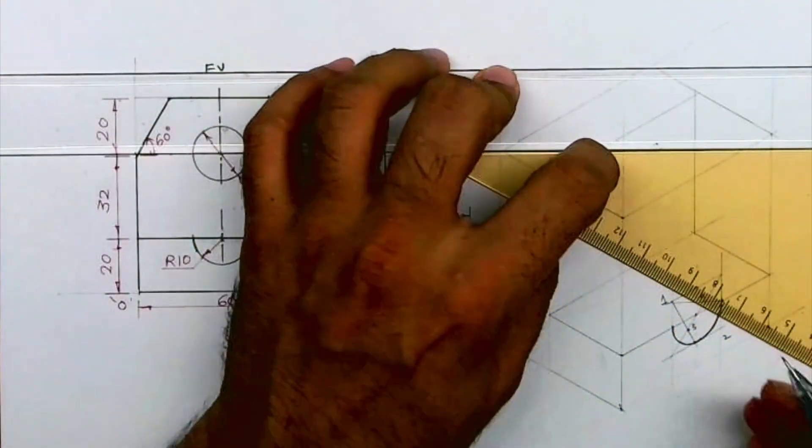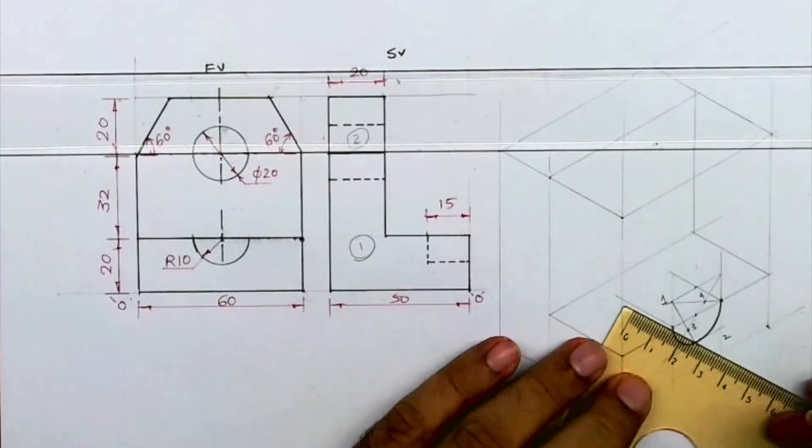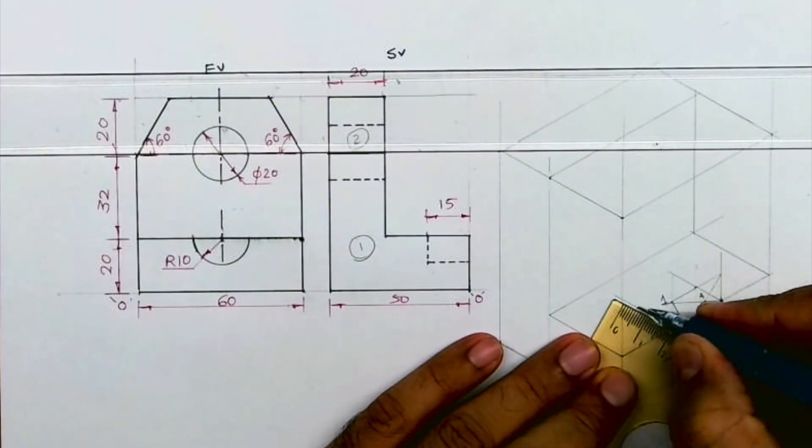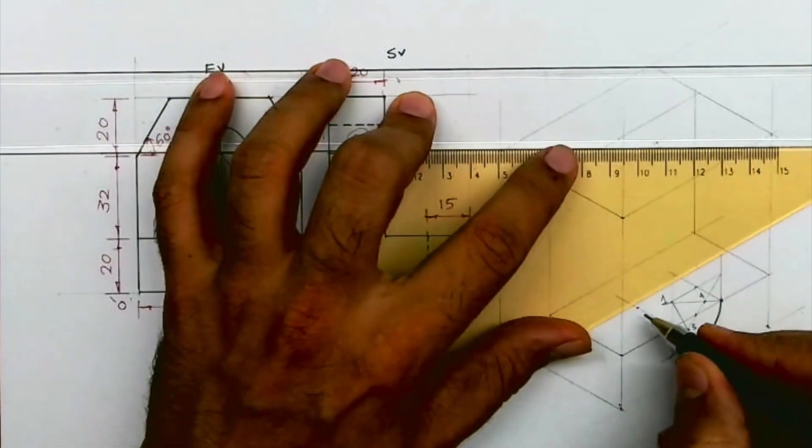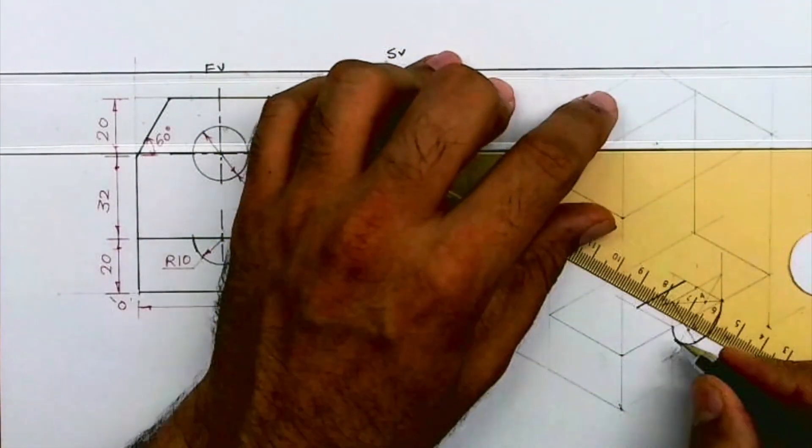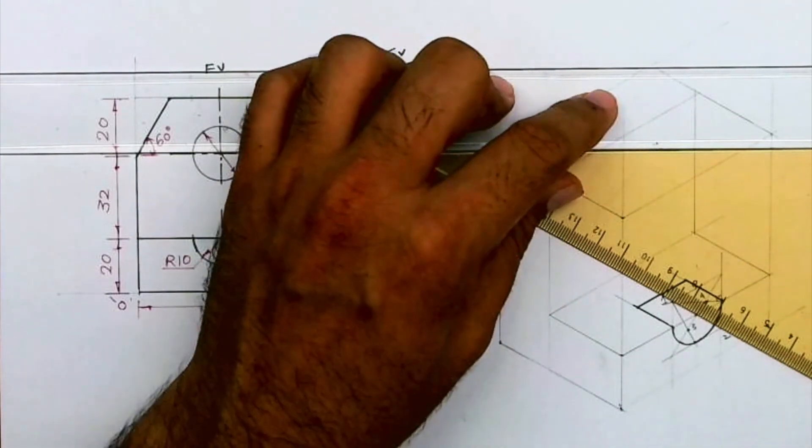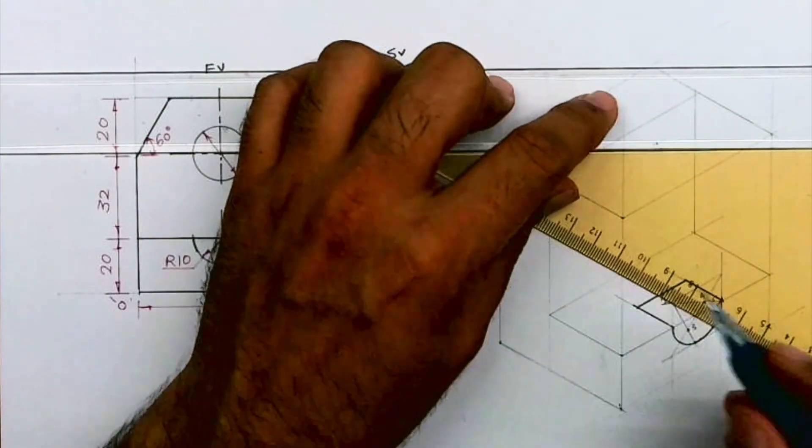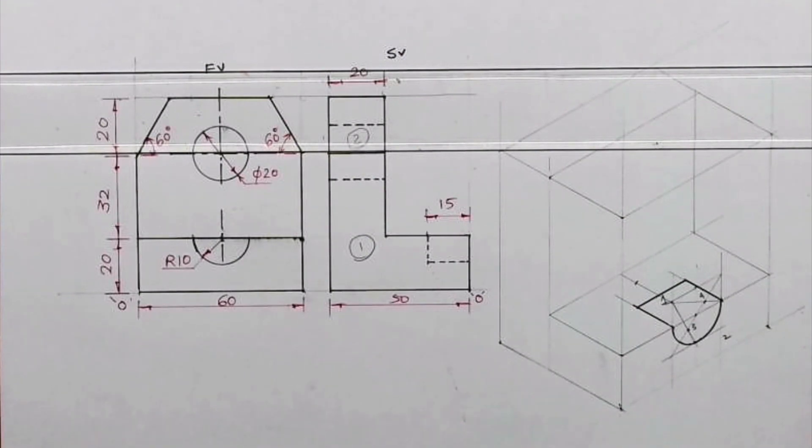After that we have to take this line behind. How much we have to take this behind? 15. Now we have a circle in the front, the same circle will be behind, so what I need to do, I need to take this point one behind by 15. This is one dash.